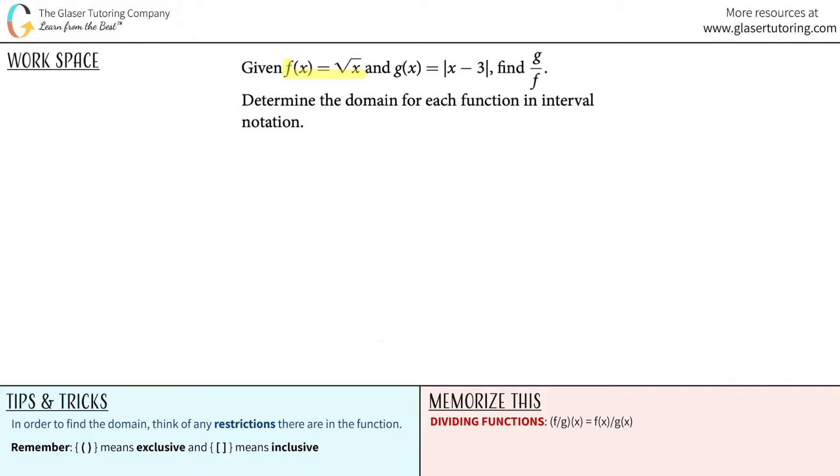Given f of x equals the square root of x and g of x equals the absolute value of x minus 3, find g divided by f and then determine the domain for each of the functions in interval notation.